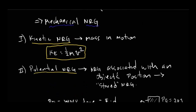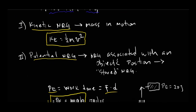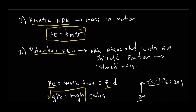To get back to the idea of energy conservation: energy can't be created or destroyed, but it can be converted from one form to another. So when we're talking about mechanical energy, we're discussing these two forms — potential and kinetic — being interconverted. Sometimes potential energy is converted to kinetic, sometimes kinetic is converted into potential.